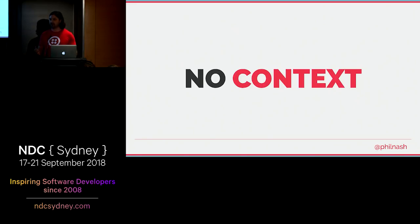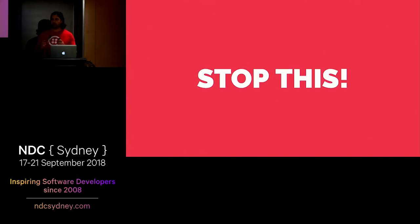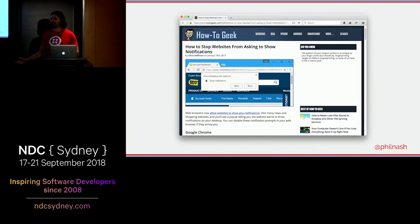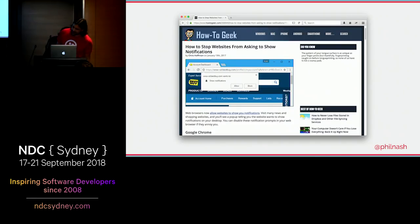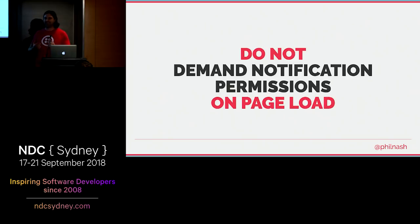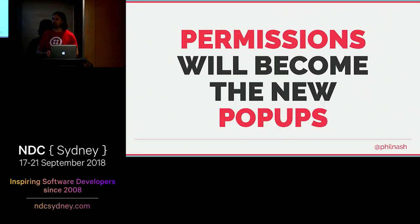This really is the problem with these permissions dialogs being popped up at users — they don't want it because there's no context. They don't know they want it. How could they? They just got there. As web developers, as people who care about user experiences, we need to stop. Because if we don't stop this, then the users are going to. I found a site when Googling "how to stop websites showing notifications" — it has details on every single browser that supports notifications and how to turn them off.